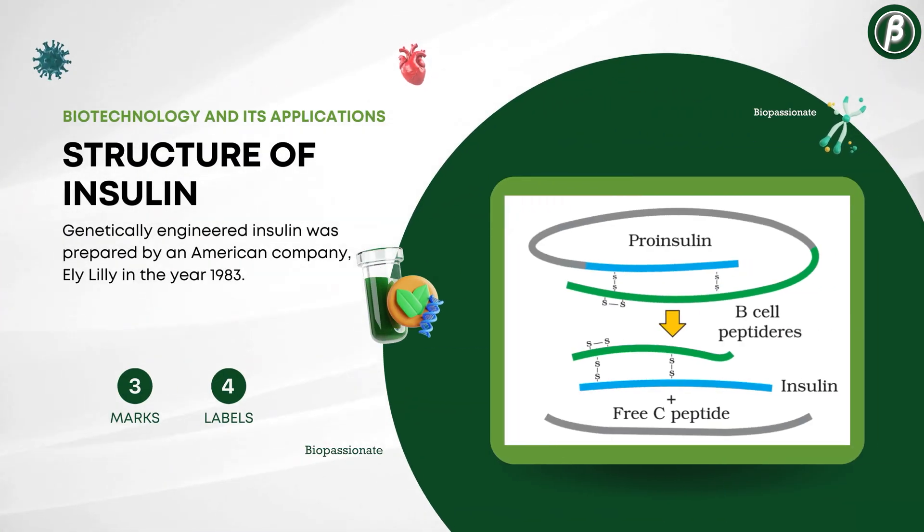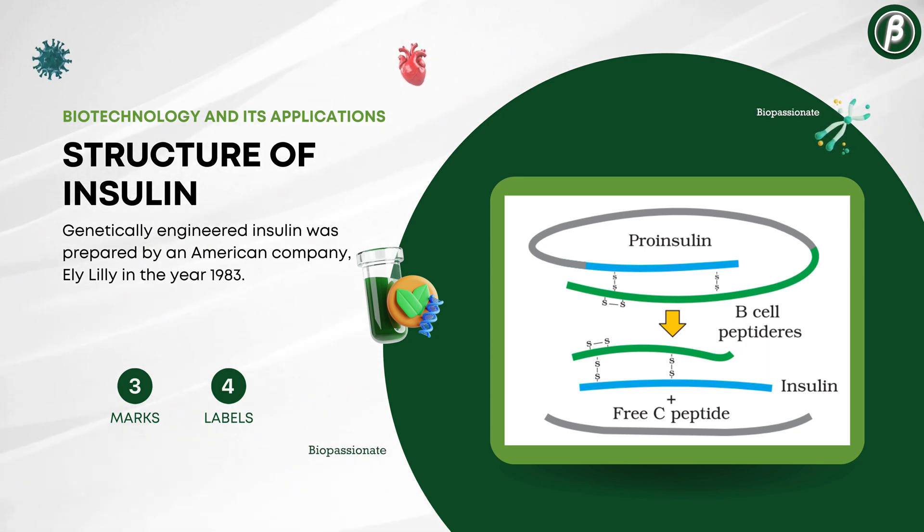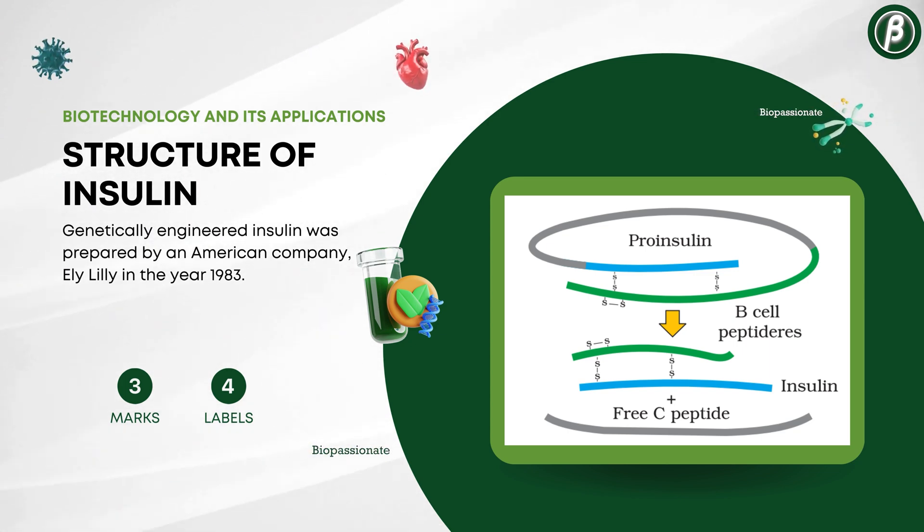Number 19: The structure of insulin, for 2 to 3 marks with a minimum of 4 labels.